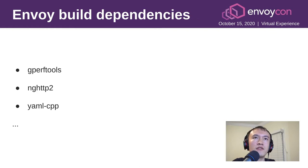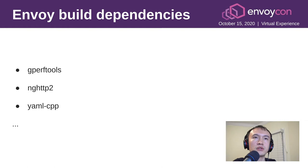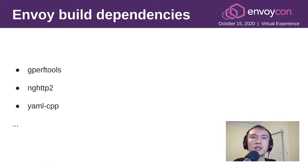Envoy also has a lot of build dependencies. Namely, the big ones are gperf tools, nghttp2 codec, YAML, protocol buffers, and so on. Luckily, we didn't have any major issues with those dependencies. We had to do some small patches to make them work with the ARM build, but overall that was a small part.